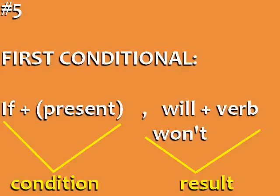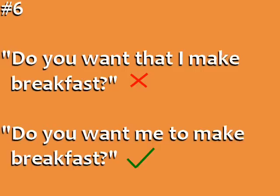In the first conditional, we have two parts of the sentence: the condition and the result. Although both are in the future, we use the present form of the verb with 'if,' and then 'will' and 'won't' with the verb in the result. Error number five: The word 'that' is not typically used after 'want.' The correct sentence uses 'want' followed by an infinitive.